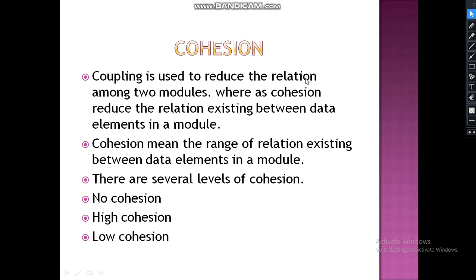Coupling is used to reduce the relation between two modules, whereas cohesion reduces the relation existing between data elements within a module. Coupling is the level of relation between modules; cohesion is the range of relation between data elements in a module. There are several levels of cohesion: no cohesion, high cohesion, and low cohesion. High cohesion means strong relation; low cohesion means weak relation.